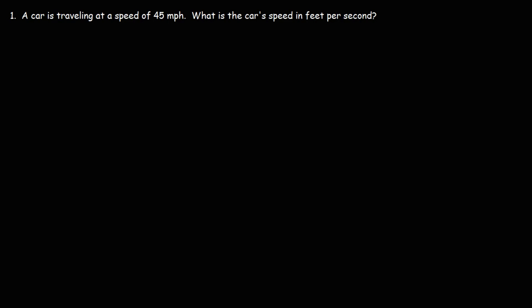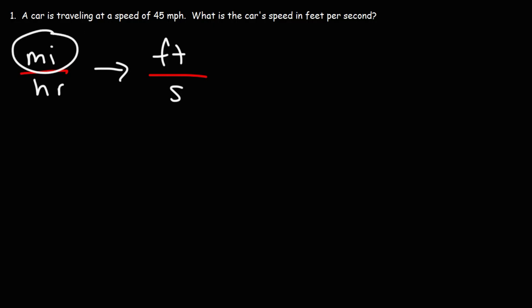In this lesson, we're going to talk about how to convert units of speed, particularly how to convert miles per hour to feet per second. This is going to be a multi-step conversion. In the first part of the problem, we need to convert units of length from miles to feet. Here's the conversion factor: one mile is equal to 5,280 feet.